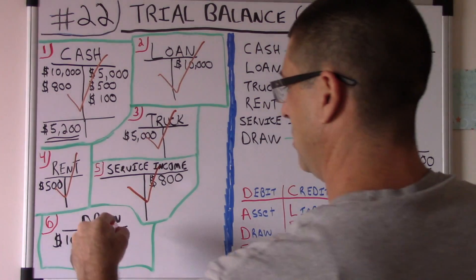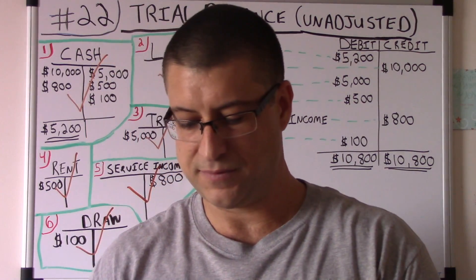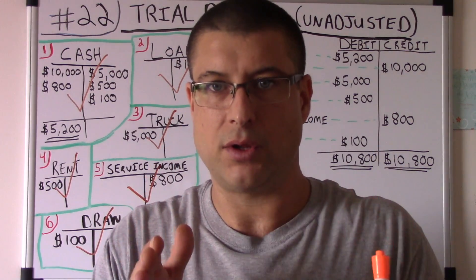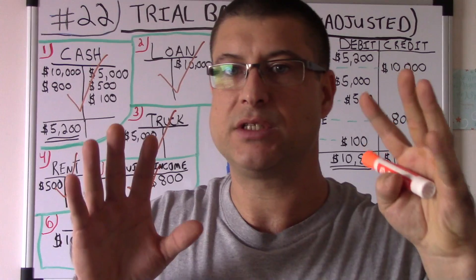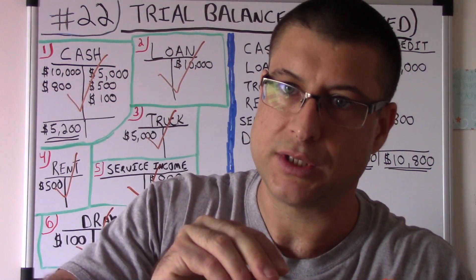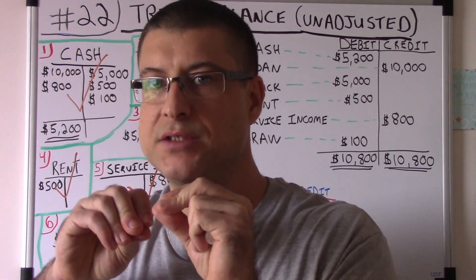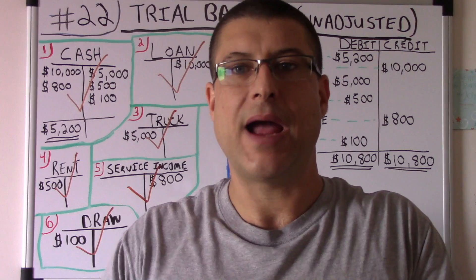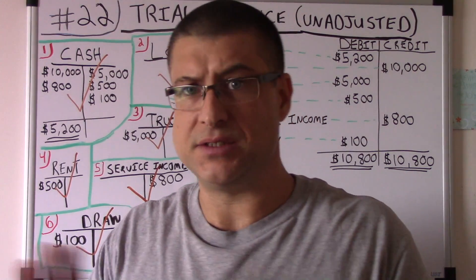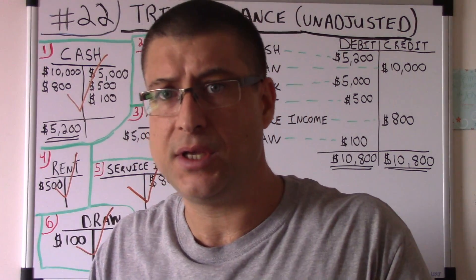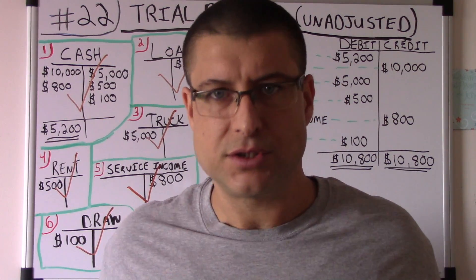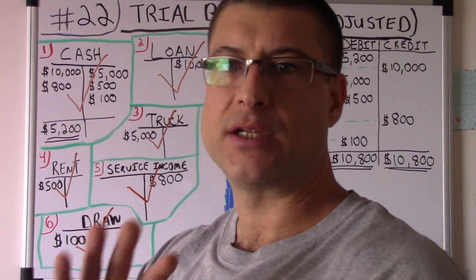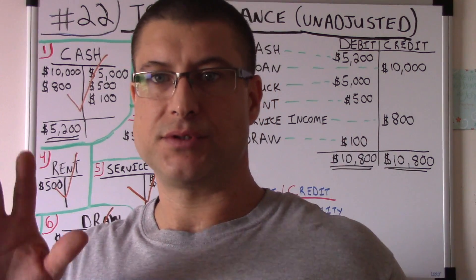Really, all we've done so far is transfer: we took our debits and credits from our journal entries, transferred the journal entries into the T-accounts, and now we're transferring the T-accounts into the trial balance. You're basically just transferring. All your thinking about whether it's a debit or credit, what type of account it is — that goes into the journal entry. If you mess up there, you're not really going to catch it here.